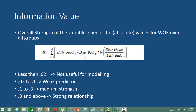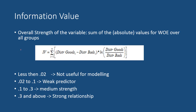In this video I am going to discuss what is information value and how we calculate it. Information value measures the overall strength of variables. We can compare the predictive power of different variables using the information value. It is the sum of the absolute values of the WOE over all groups.